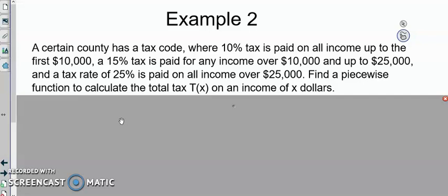A certain county has a tax code where 10% tax is paid on all income up to the first $10,000. A 15% tax is paid for income that's over $10,000 and up to $25,000. And a tax rate of 25% is paid on all income over $25,000. We're going to find the piecewise function to calculate the total tax on an income of x dollars.